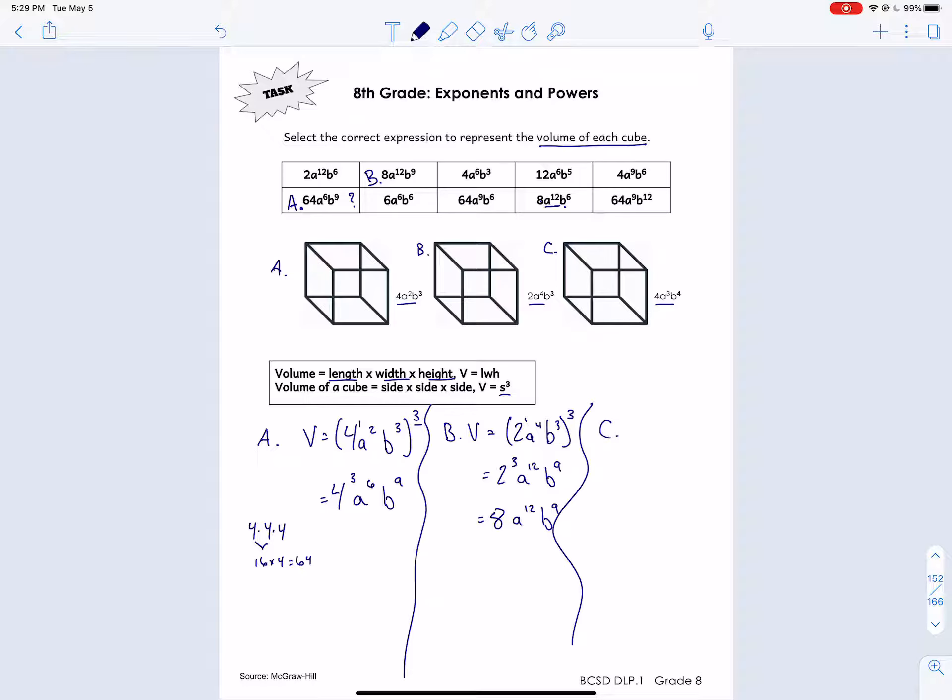Okay, cube C. We have one side length is 4A cubed B to the 4th. And we're going to cube that. And then add an exponent for that number. So we have 4 to the 3rd, A, and we're multiplying 3 times 3 is 9. B to the 4 times 3 is 12th power.